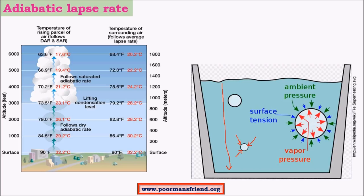As we move upwards from the bottom, the pressure usually falls. This is because of the lesser amount of weight offered by the upper layers, and hence the pressure on the water bubble decreases. As a result, the volume of the water bubble increases. This is because of the decrease in ambient pressure which is acting on the bubble.